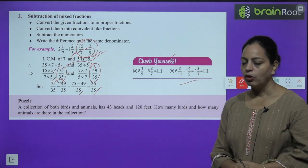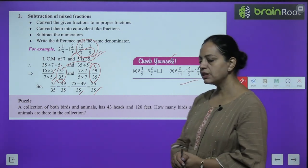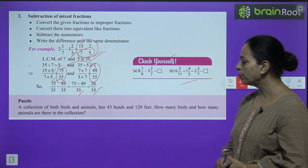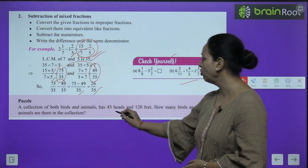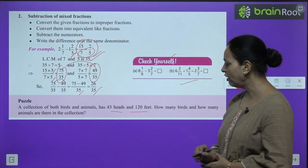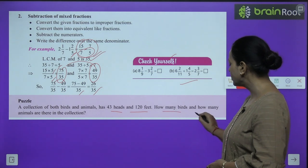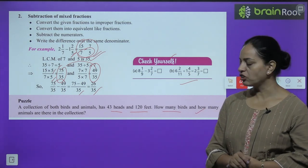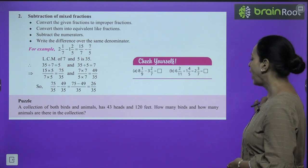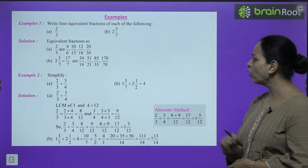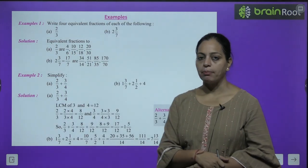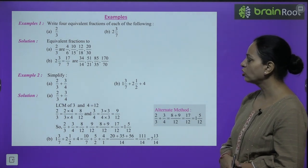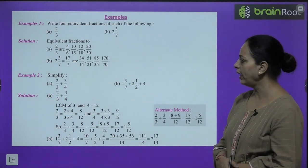Now one puzzle is given: a collection of both birds and animals has 43 heads and 120 feet. How many birds and how many animals are there in the collection? You can think about it and solve it.